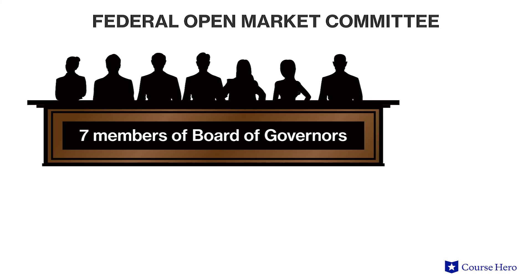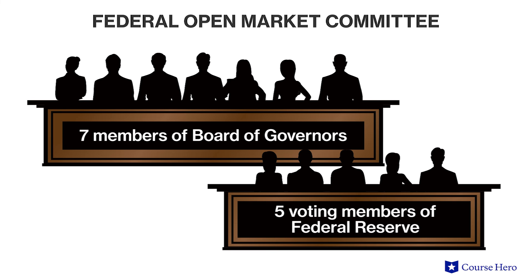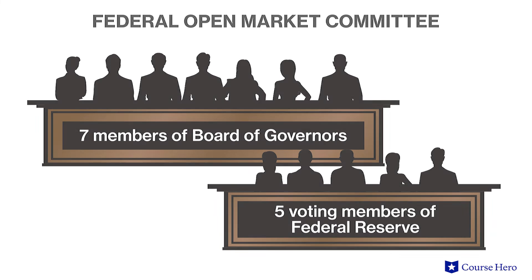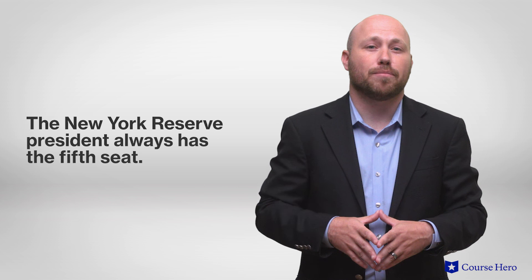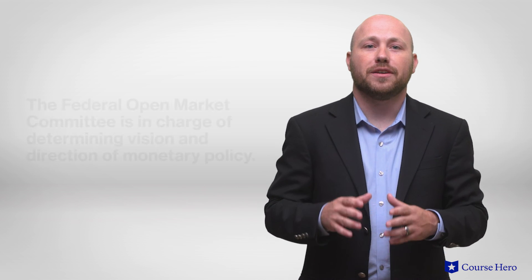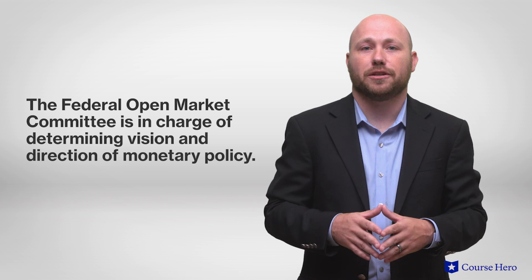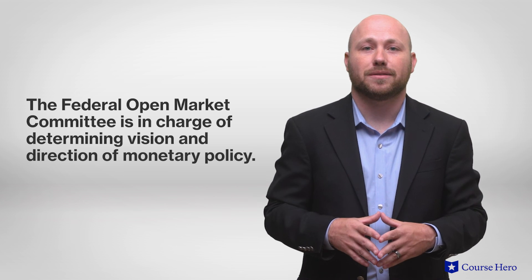The Federal Open Market Committee is made up of the seven members of the Board of Governors, as well as five voting members from the Regional Federal Reserve Banks. Four of the five voting members serve on a rotating basis between bank presidents, and the New York Reserve president always has the fifth seat. This committee is in charge of determining the vision and direction of monetary policy, including interest rates.